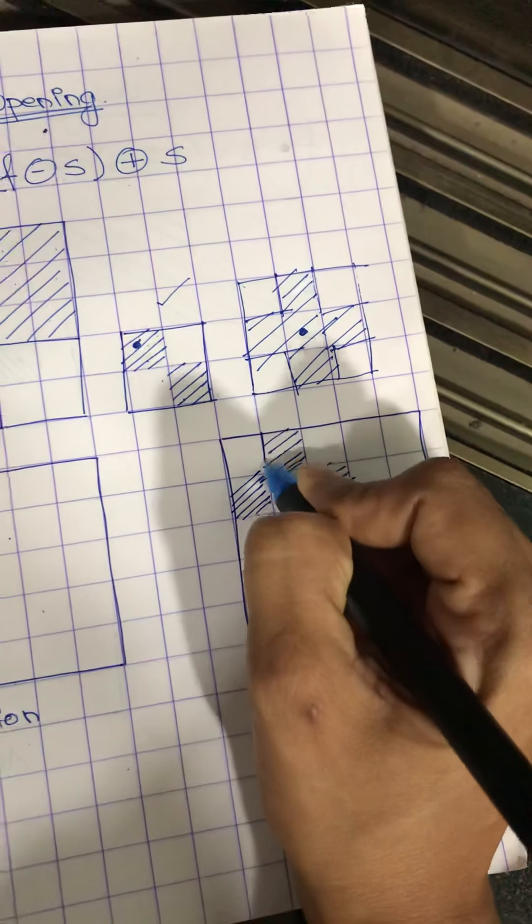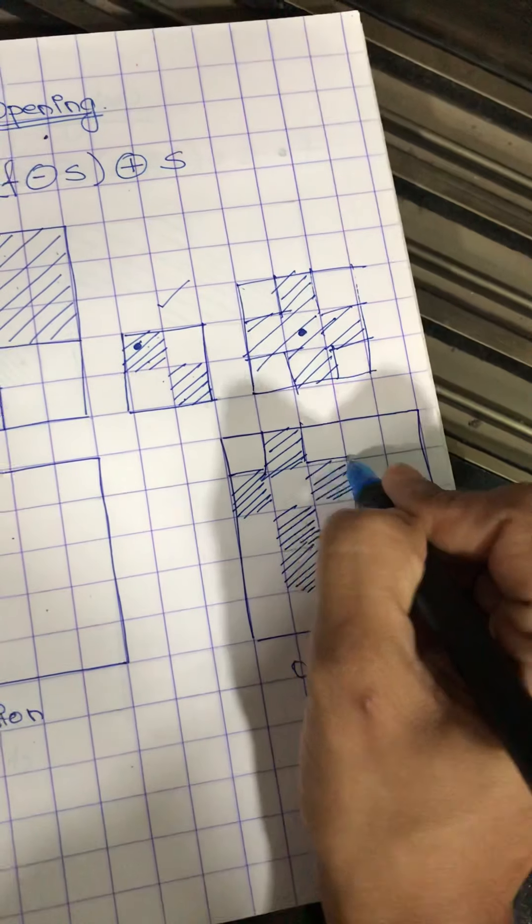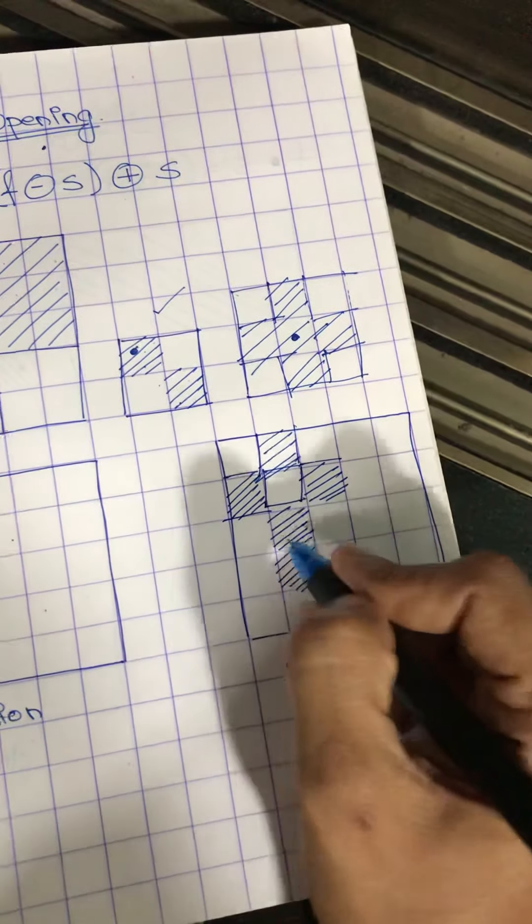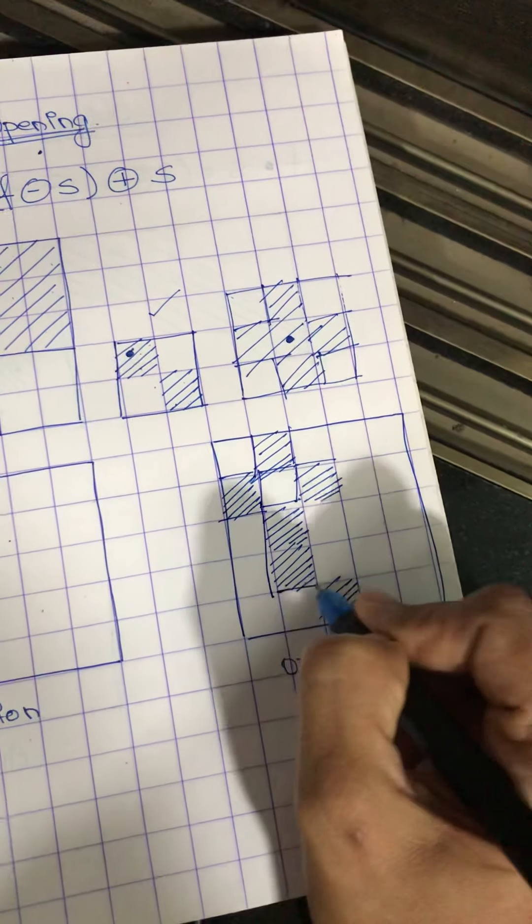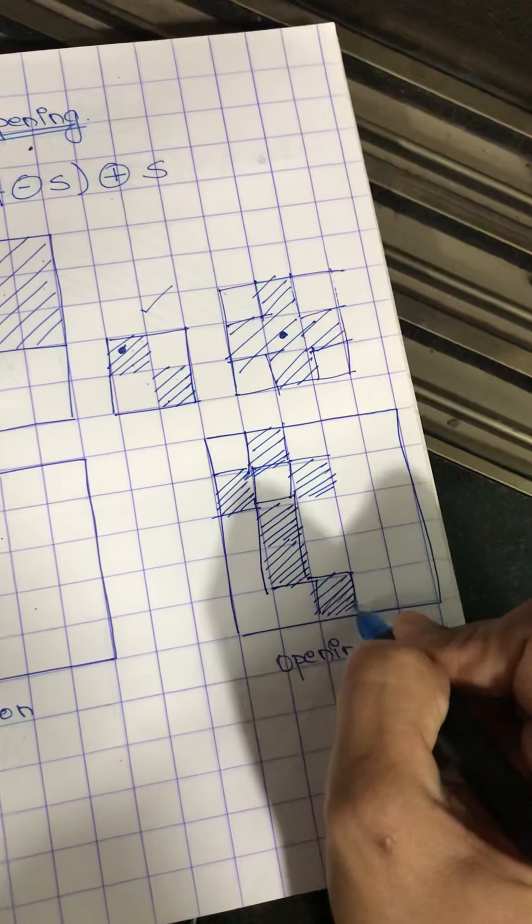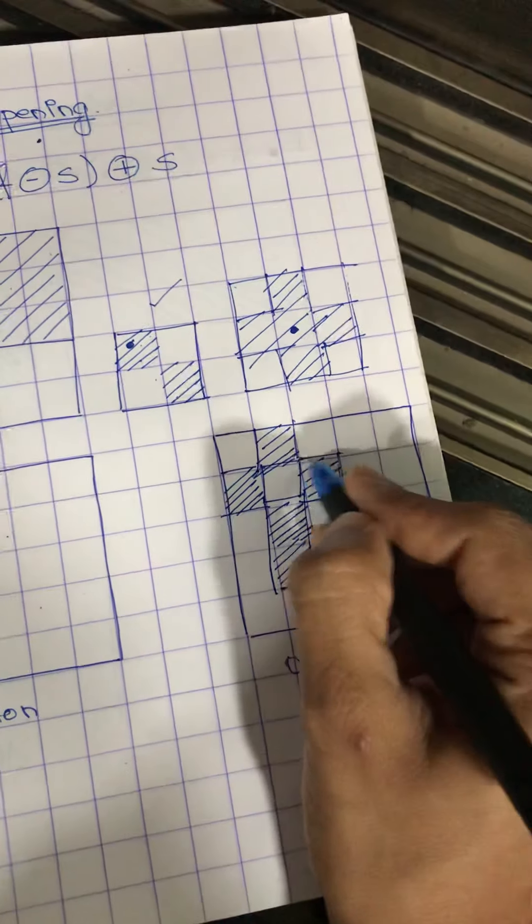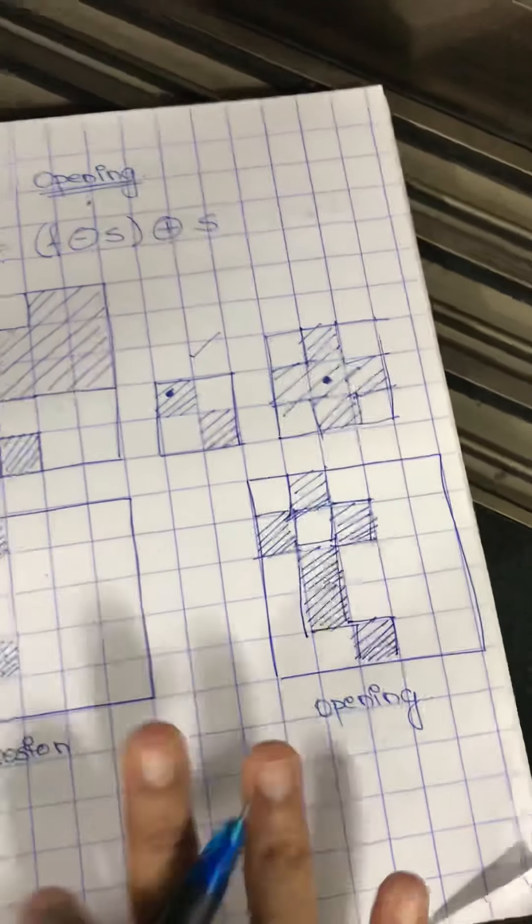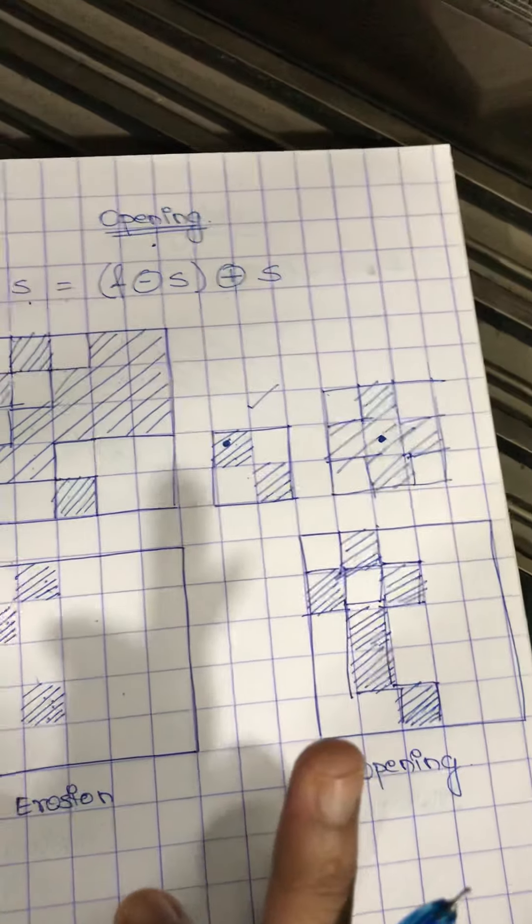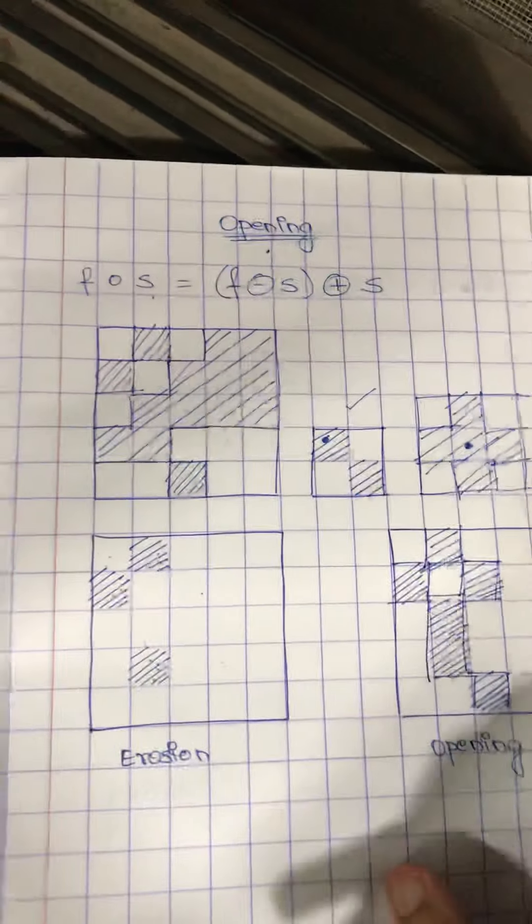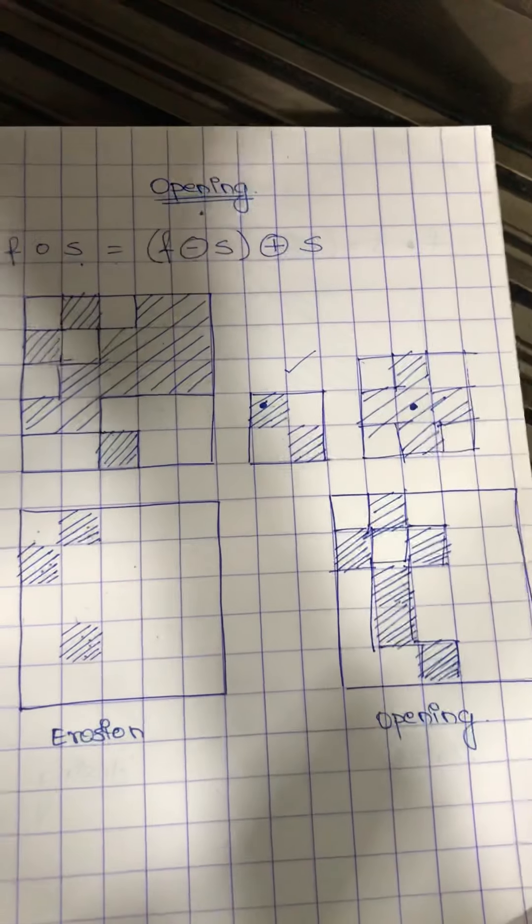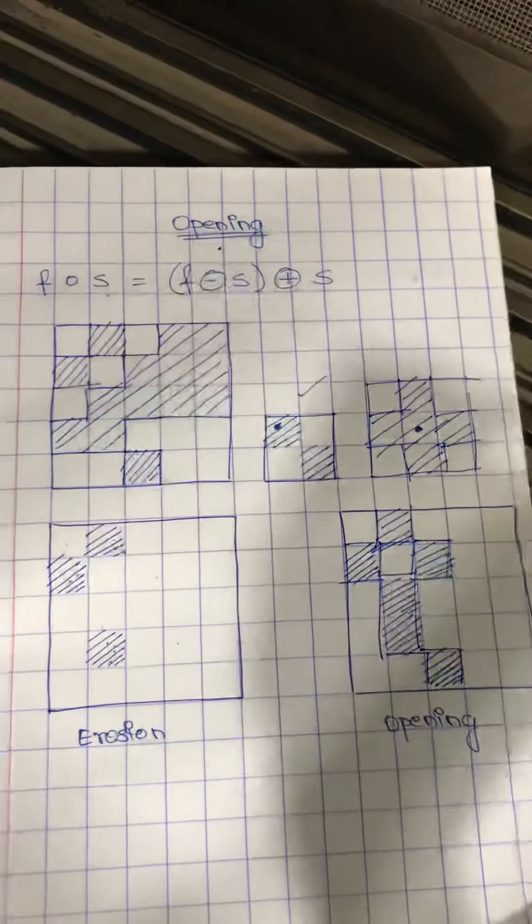We just draw a border. Right now, you might not understand what is exactly the process. But if you apply it on real images, you will understand what happens in opening, what happens in closing. I will be uploading a presentation on this which will help you to understand better.